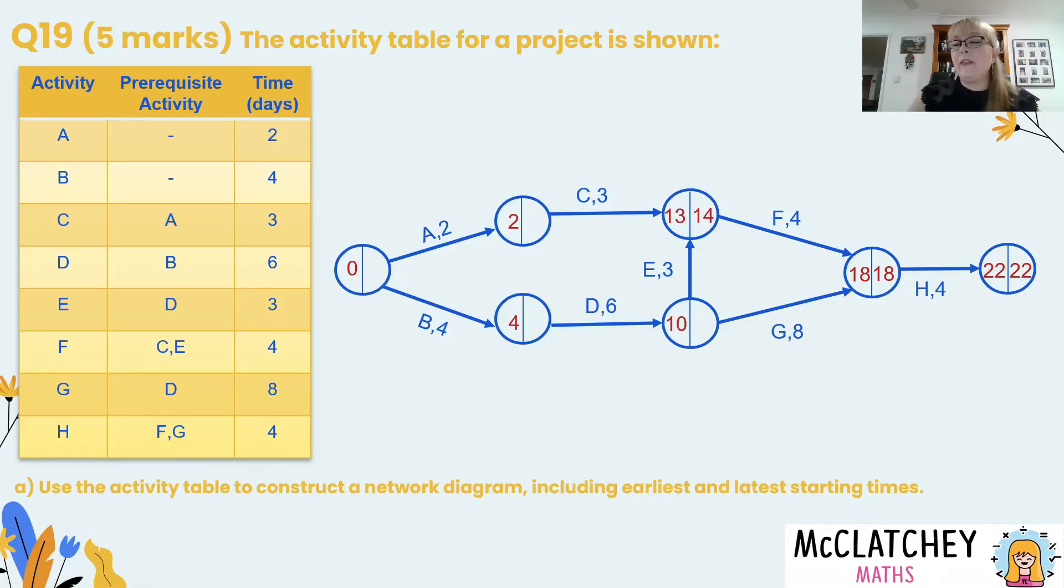So now I'm going to move back that pathway along C. 13 take away 3 gives me 10. So now I've filled across the whole top of that first pathway. So now I'm going to come back and backward scan through here and here I've got some choices. Coming down this pathway here I'm either going to have 14 take away 3 which is 11 or 18 take away 8 which is 10. So I've got a choice of 11 or 10 to put into this vertex here.